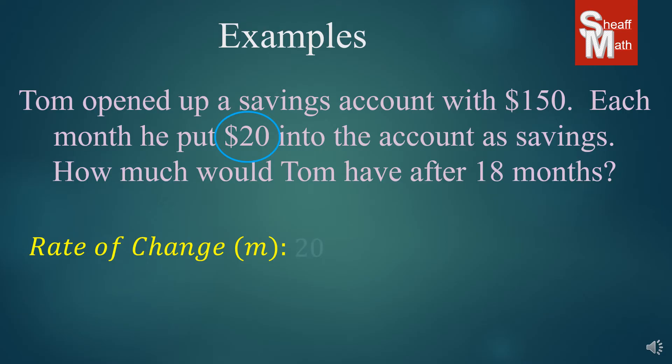And so after we get our rate of change of 20, we then have to find our initial value. And so that's pretty easy to see. That's the money that he puts into that savings account at the beginning, no matter how much he adds to it or subtracts to it, he will always have put that money in at the beginning, right? That was his starting point, 150. So that's our initial value.